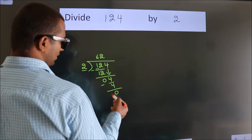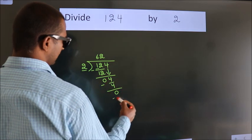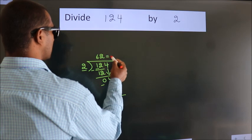We get 0. After this, no more numbers to bring it down. And we got remainder 0. So this is our quotient.